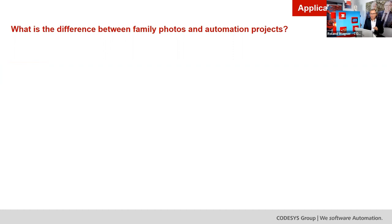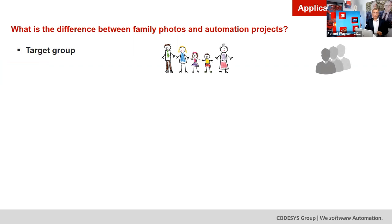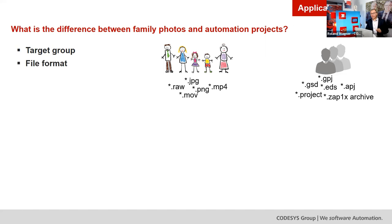Let's come back to what is the difference between family photos and automation projects. First, the target group: here we have the family watching videos and photos; on the other hand there are industrial engineers who want to access automation projects. The file formats are different too — with family photos we have JPEGs, PNGs, perhaps MP4 videos; in the automation industry we have totally different formats — project files, compressed project files, device descriptions, things like that.